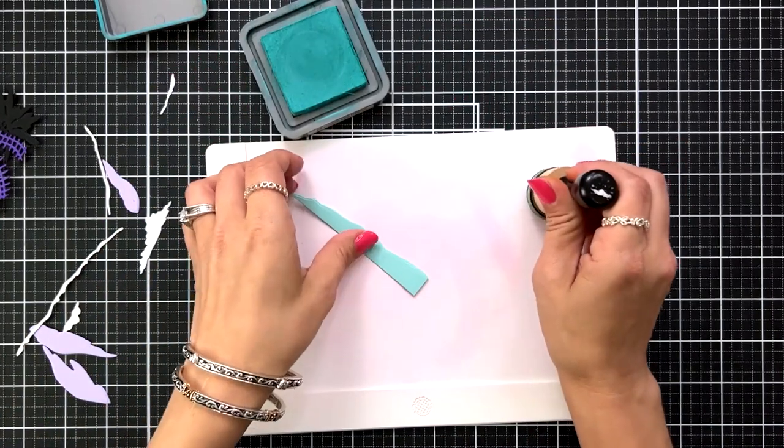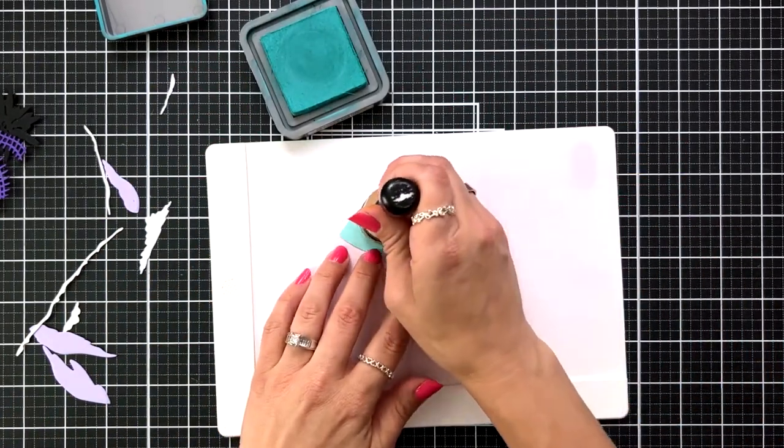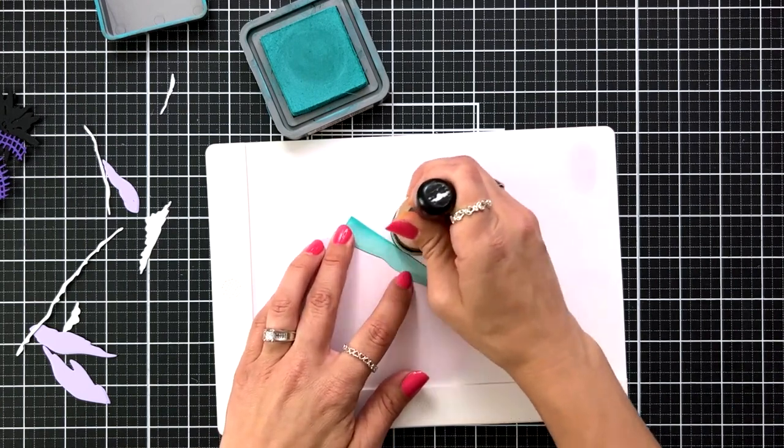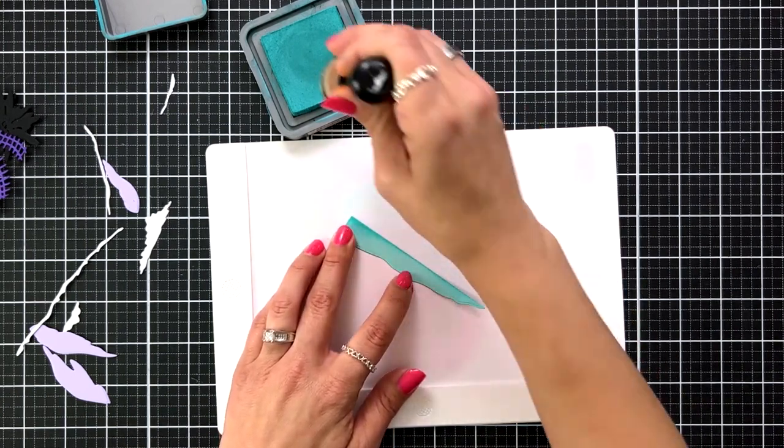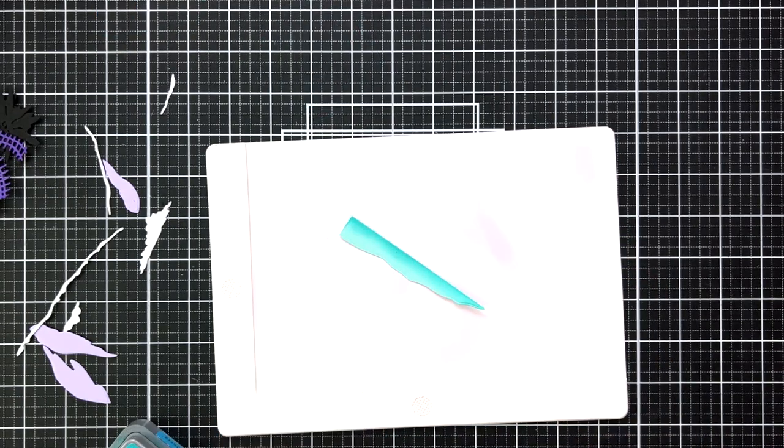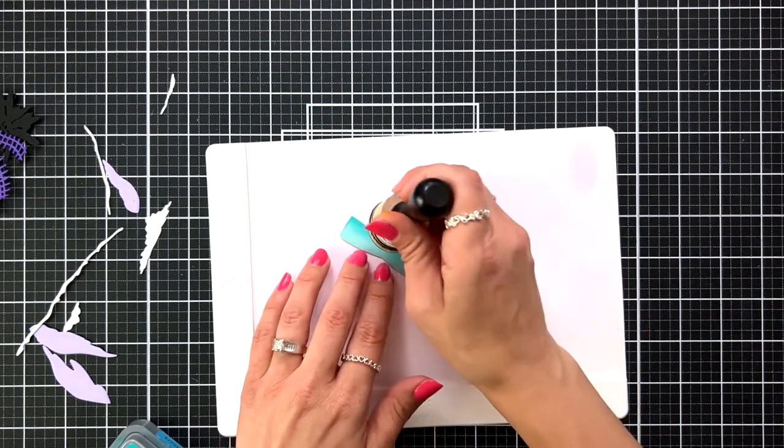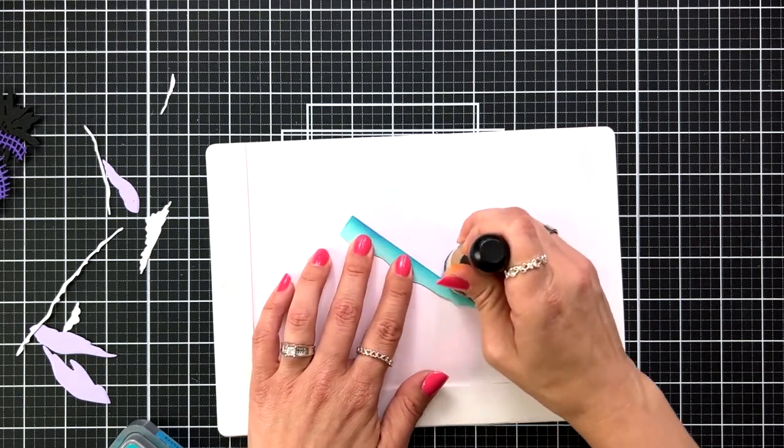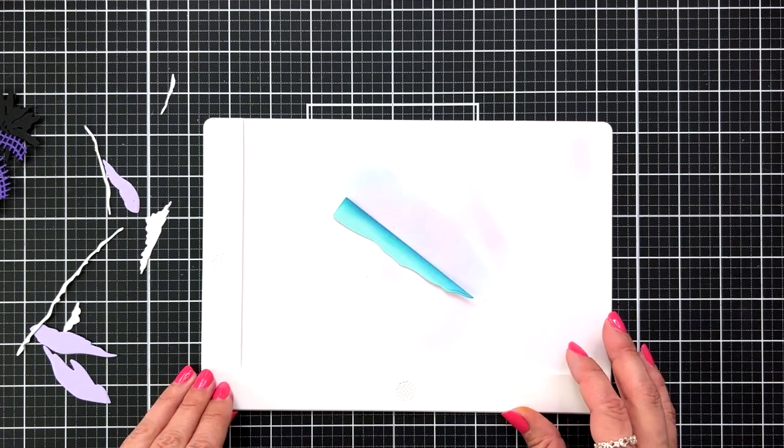I'm going to do a little bit of ink blending to some of these pieces. Now this piece, which is going to be the water, the flat edge is going to be the top of your water line. So I'm starting off doing some ink blending with peacock feathers and then I'm going to bring in, I think it's either blueprint sketch or prize ribbon. It's just whatever was left over on my blending brush and adding that right to the very edge.